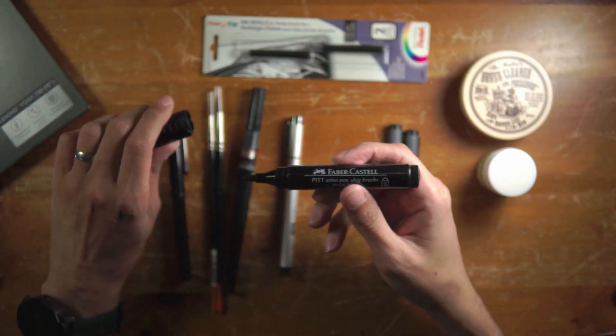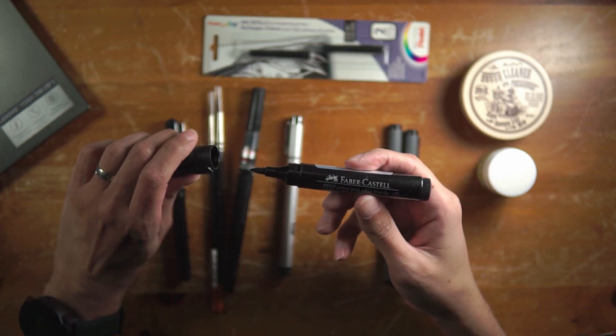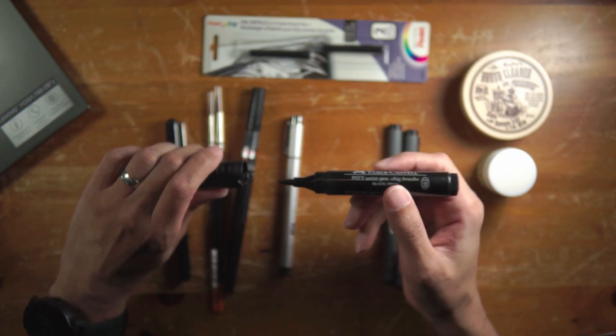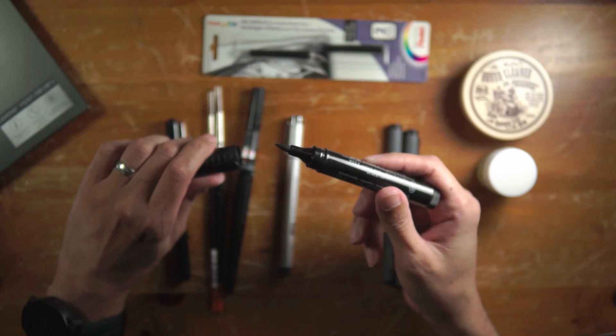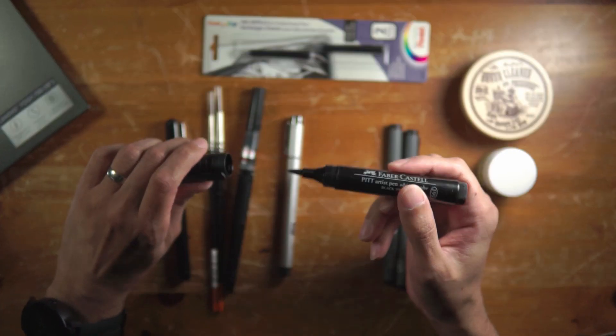This is the 199 Faber-Castell Pitt Artist Pen, and it's also known as the Big Brush. So generally I will use this for some type of effects or maybe to fill in a small large black area, but I don't use this as much as I do my other tools.